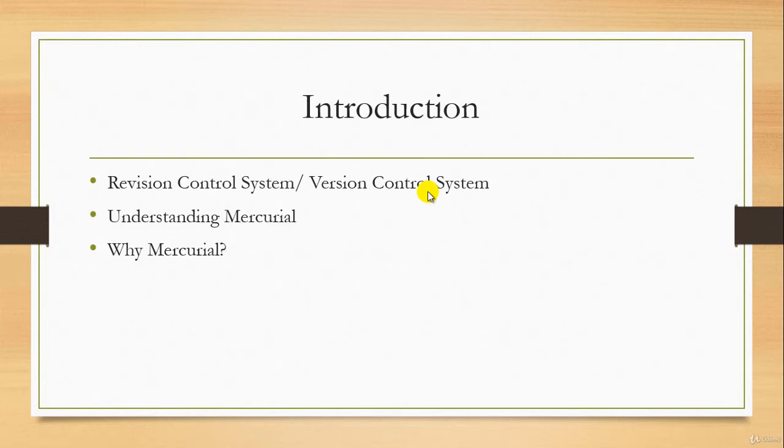In that scenario, you can go to the specific version, take the same code, apply it, and check whether it's working. This reduces the amount of work. Revision control systems make it easier to collaborate with multiple users, help users recover from mistakes, and help work simultaneously on multiple versions of the project.